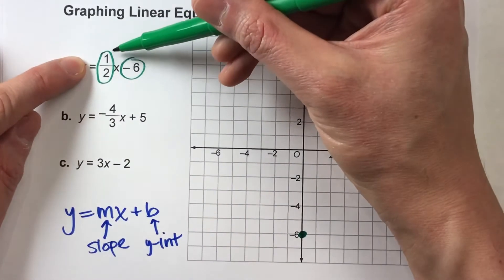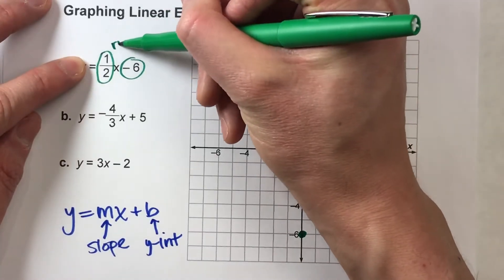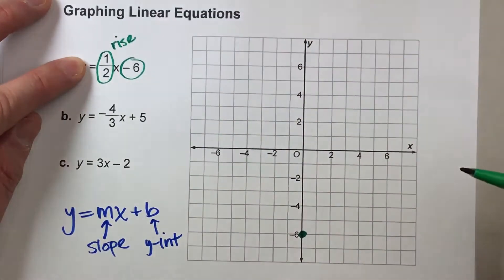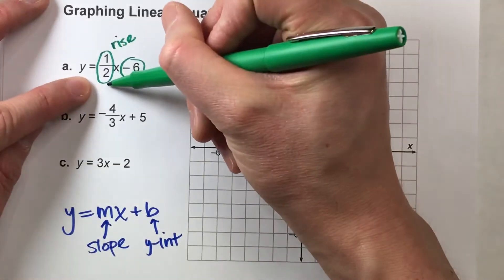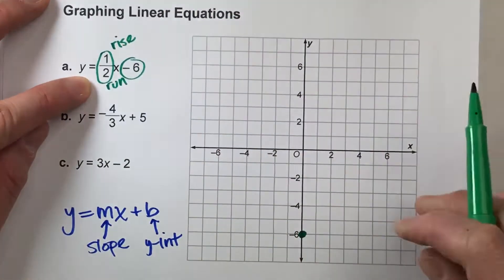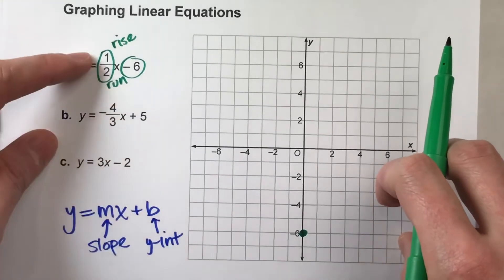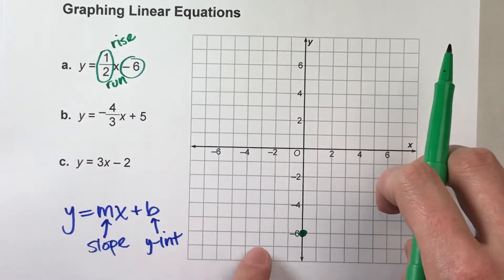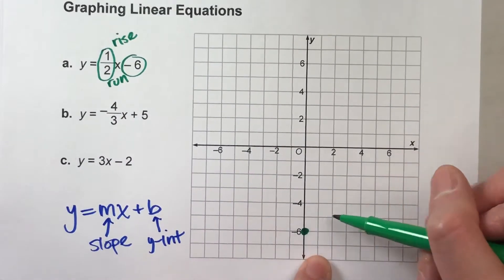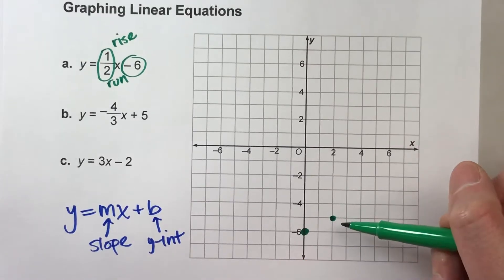So this tells us the pattern of the points. The top number is your rise. That means how much up or down we're going to go. And the bottom number, the 2, is the run. That tells you how far to the right we're going to go between each pair of points. So if my rise is 1 and my run is 2, the pattern is up 1, right 2, and then you plot a point. And then you repeat.